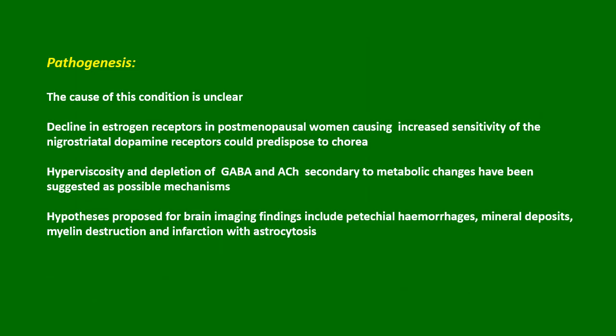Pathogenesis. The cause of this condition is unclear. Decline in estrogen receptors in postmenopausal women causing increased sensitivity of the nigrostriatal dopamine receptors could predispose to chorea. Hyperviscosity and depletion of GABA and acetylcholine secondary to metabolic changes have been suggested as possible mechanisms. Hypotheses proposed for brain imaging findings include petechial hemorrhages, mineral deposits, myelin destruction, and infarction with astrocytosis.